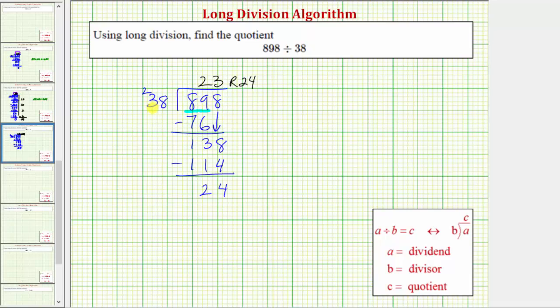And therefore 38 is not a factor of 898. This division problem also tells us that the quotient of 23 times the divisor of 38 plus the remainder of 24 equals 898.